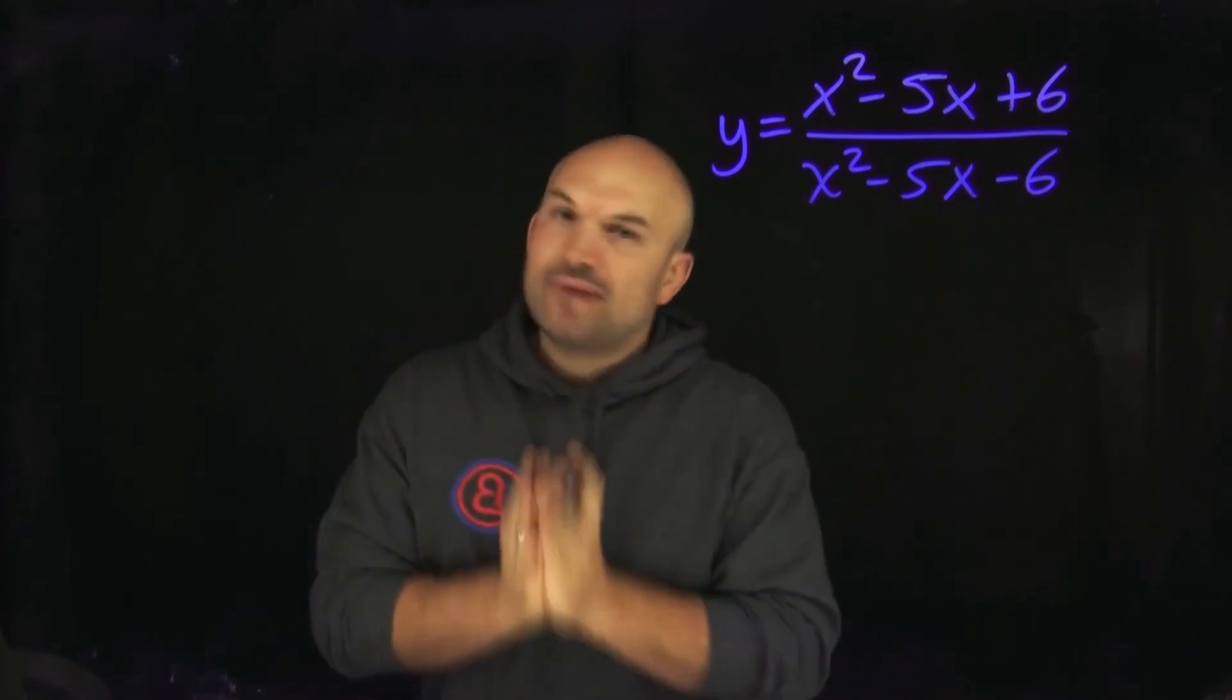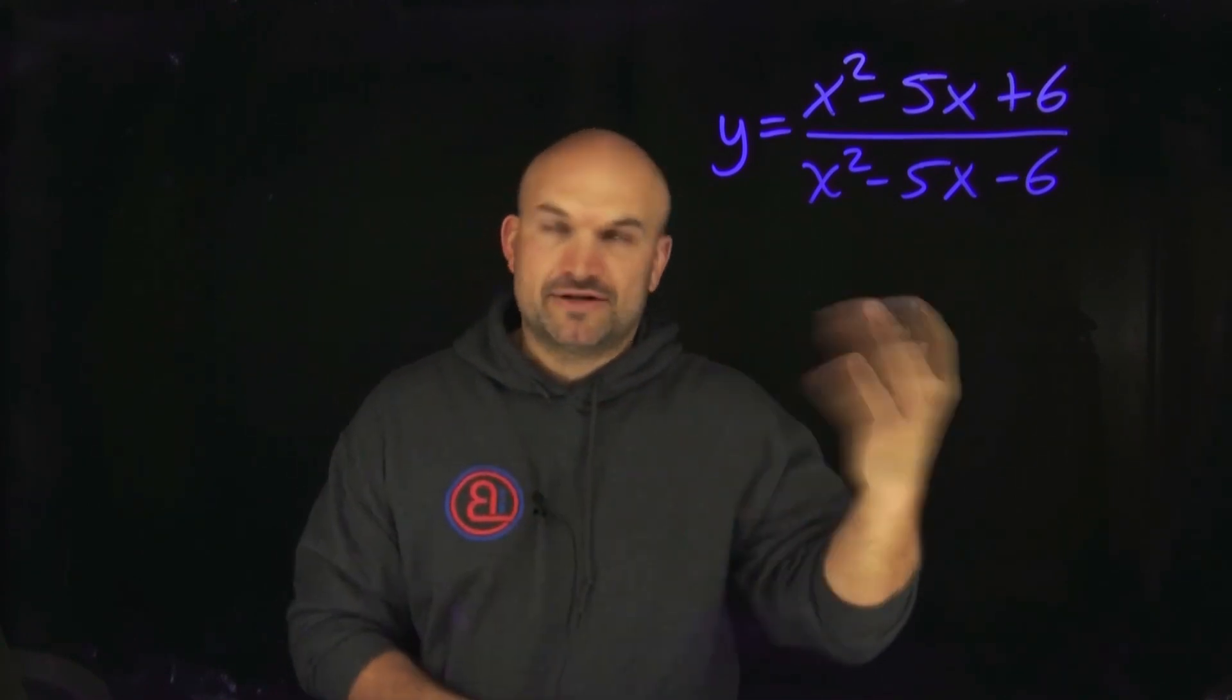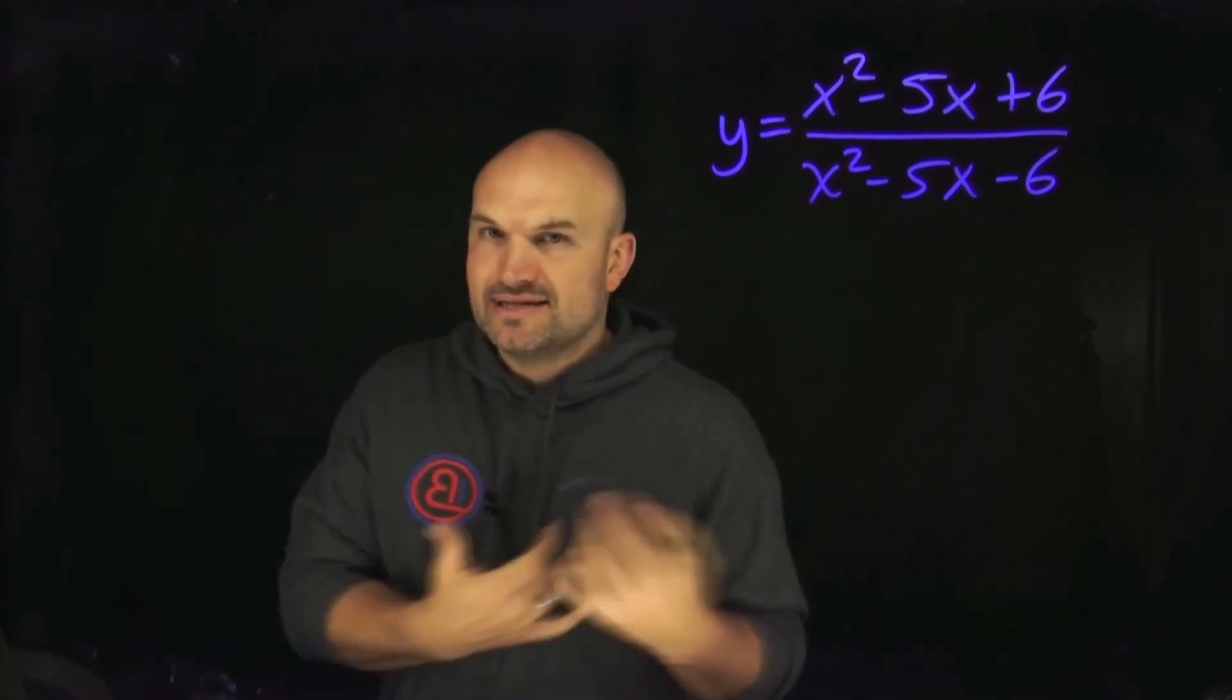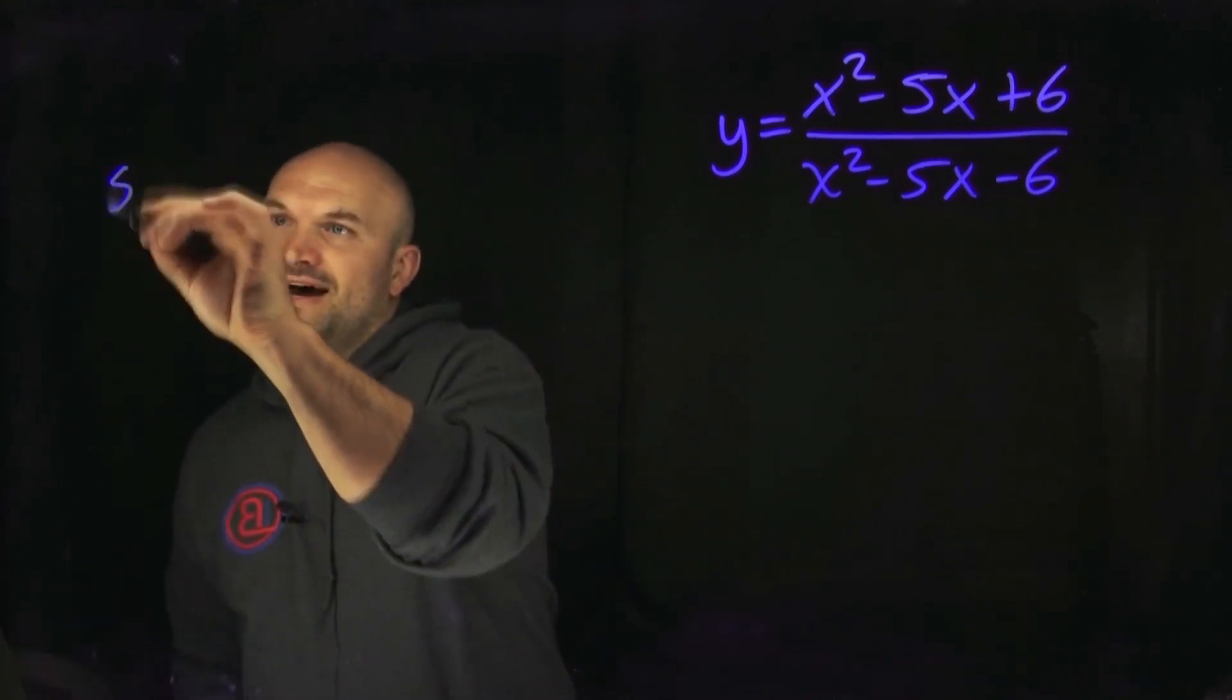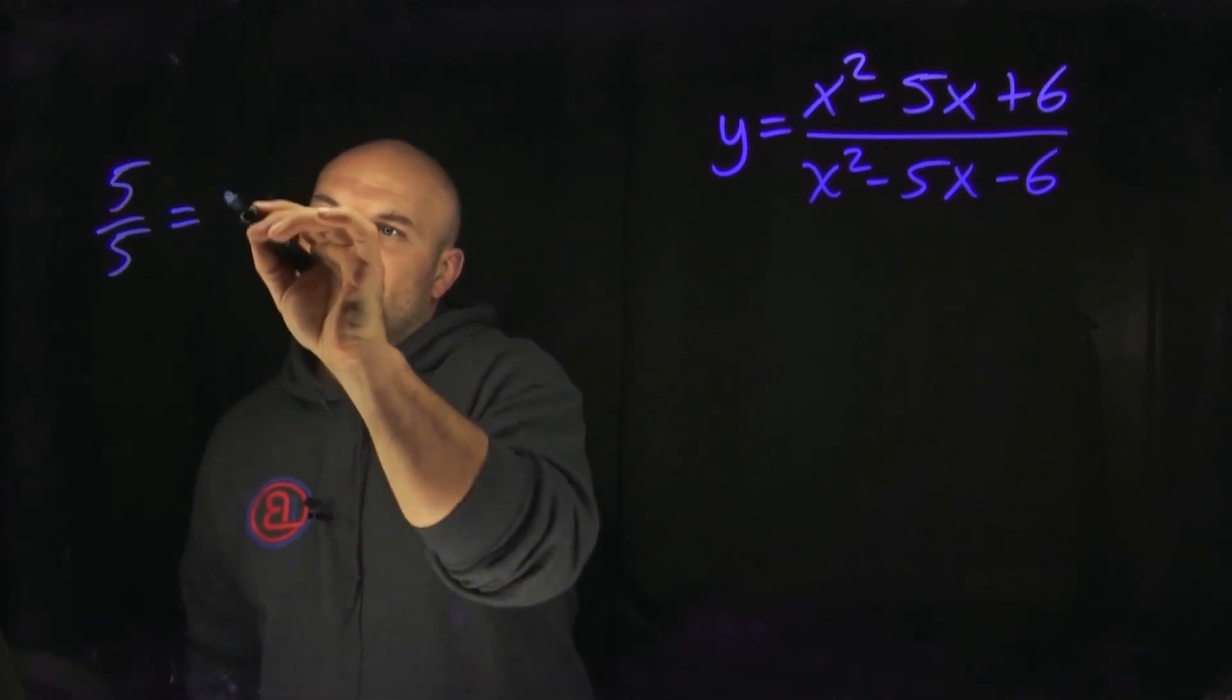See, the thing is the division property is very important, especially when we're trying to simplify rational expressions. And the division property just simply works like this. If I had a five divided by five, that's equal to one, right?